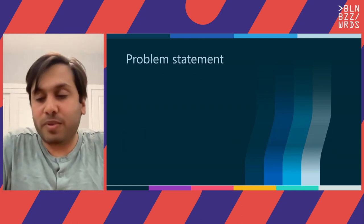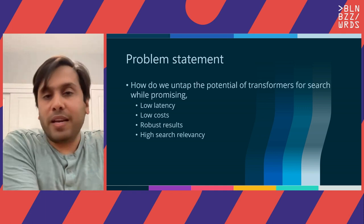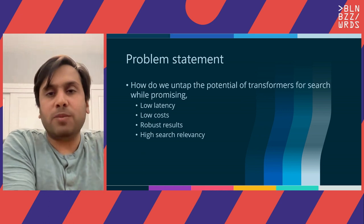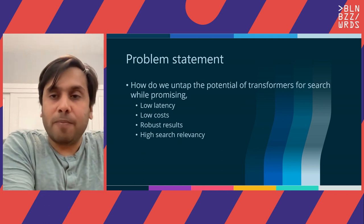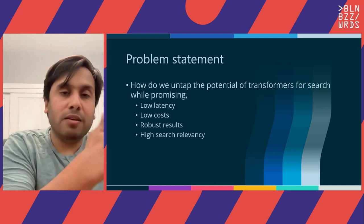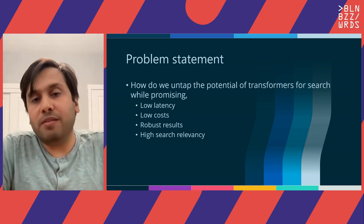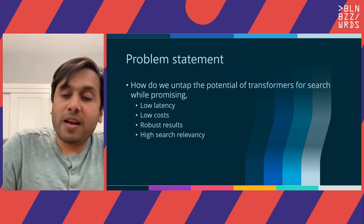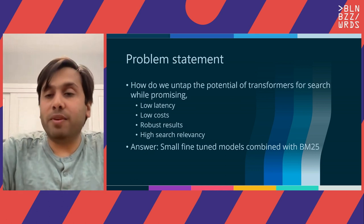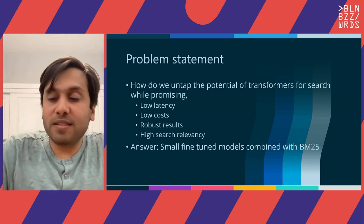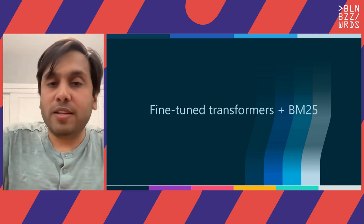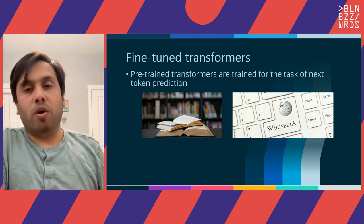So how do we fix this problem? That's where the precise problem statement comes in: how do we unlock the potential of transformers, which clearly seem to be capturing some aspect of search relevance and natural language understanding, while meeting the requirements of enterprise search such as low latency, low costs, high search relevancy, and robustness? We believe that the solution to this problem is small fine-tuned models combined with BM25.